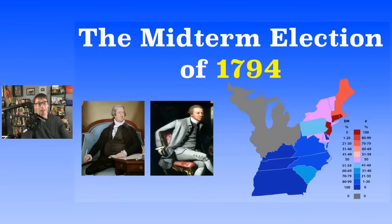The second midterm election in American history was 1794. That last election started the Second Congress. Now we're jumping ahead to the Fourth Congress. By this time, George Washington is into his second term, and things are starting to change.